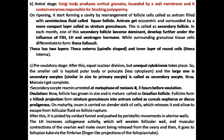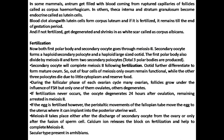The secondary oocyte is arrested at metaphase of meiosis 2, and this arrest is only released when fertilization of the secondary oocyte takes place with the sperm. In mammals, the antrum is filled with blood coming from the ruptured capillaries of follicles, and this is called corpus haemorrhagicum. In other cases, theca interna and stratum granulosum form the lutein cells, which are endocrine in nature. The cells formed from the blood clot and lutein cells form the corpus luteum. If fertilization does not occur, it degenerates after 24 hours, then shrinks into a white scar called corpus albicans, which is the main reason for menstruation.